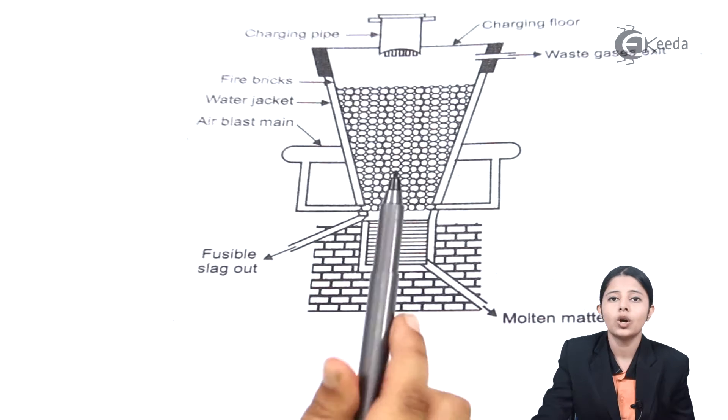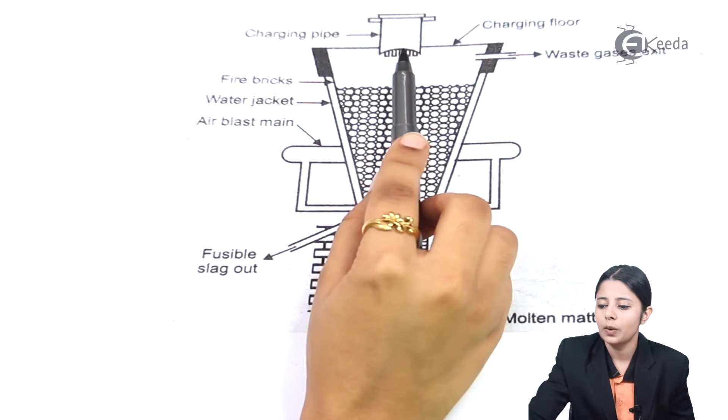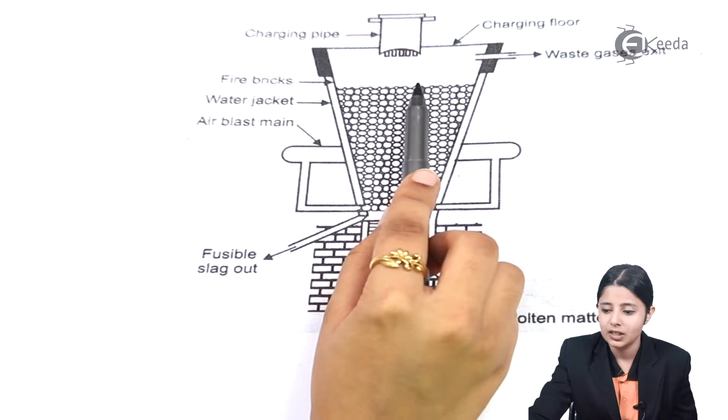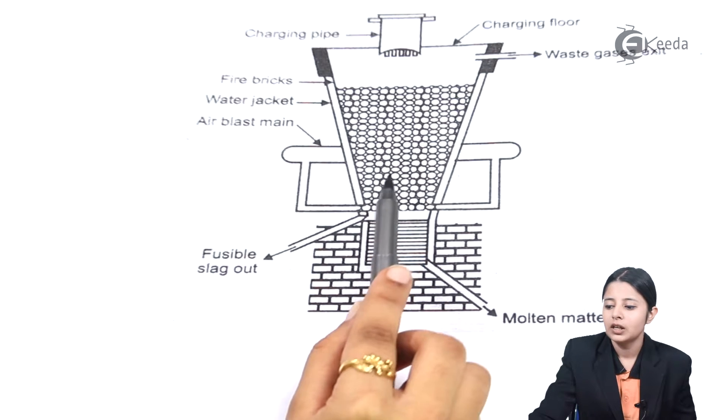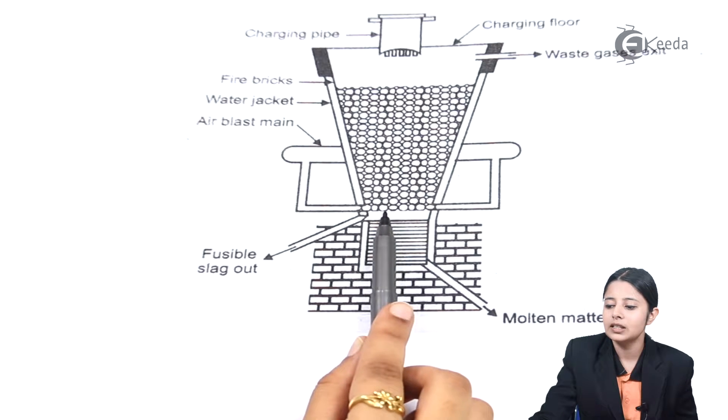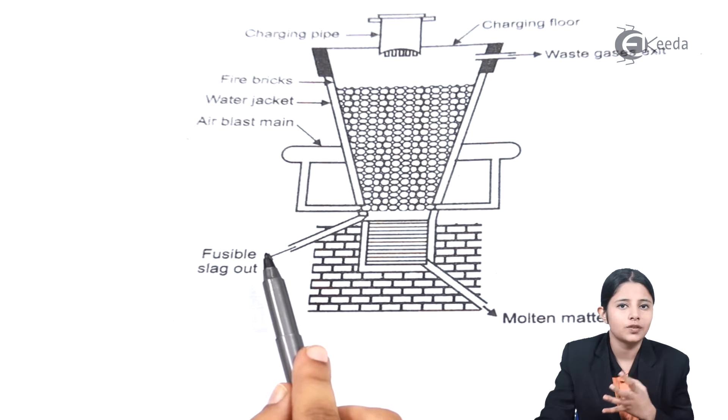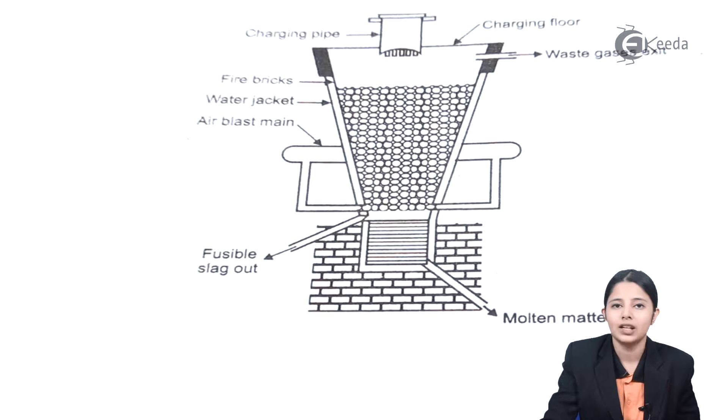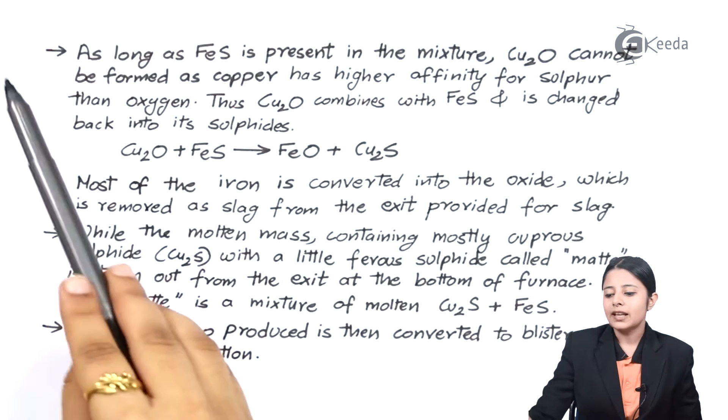So all that forms waste gases. It is very important to eliminate all the waste gases from the blast furnace. Because if that does not happen those waste gases will combine with something else and form something else, which will be very difficult to remove from the blast furnace. So now these waste gases are being removed through this small outlet, the waste gas exit. Now as the charge comes down it flows through all the fire bricks. These fire bricks are kept heated with two things. The first is the water jacket. Since the water jacket is hot the fire bricks inside it will also become hot. And the second most important thing is the air blast main. This air blast main keeps on giving in hot blasts of air, keeping the fire bricks at a very high temperature.